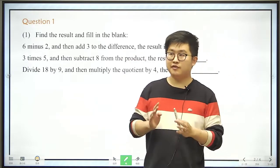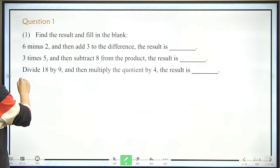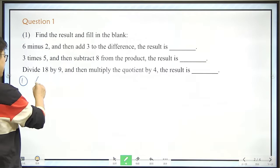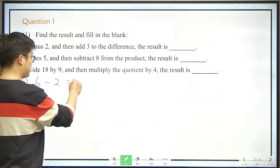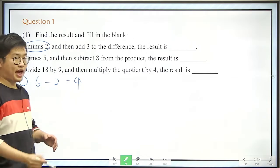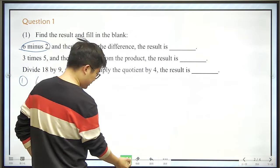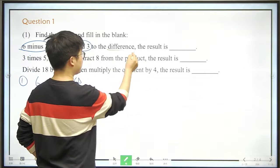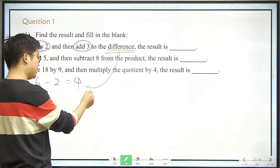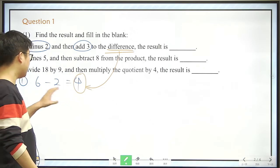The first question is very simple. The first one is 6 minus 2, that is 4 of course. And then what should we do? We should add 3 to the difference. So what is a difference? 4 here is the difference, right, because difference means the result of a minus, or we say of a subtraction.